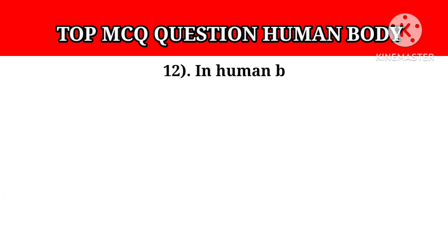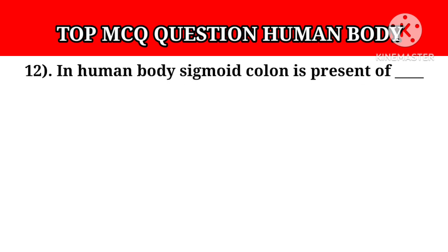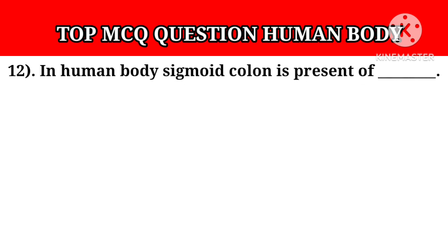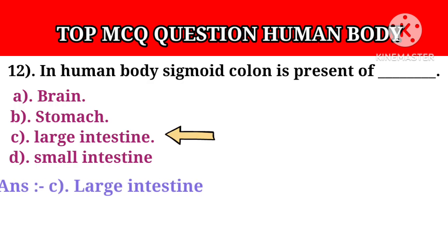Question number 12: In the human body, the sigmoid colon is present in? Option A: Brain. Option B: Stomach. Option C: Large intestine. Option D: Small intestine. Answer C: Large intestine.